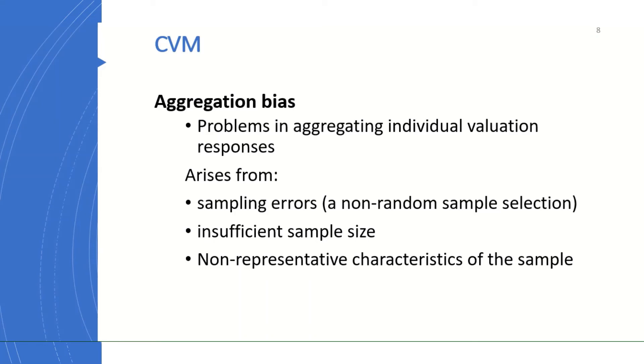Or non-representative characteristics of the sample are focused on. That is, if the survey focuses only on women or men only, generalizing the result from such survey to population might be biased. That's what we call aggregation bias.